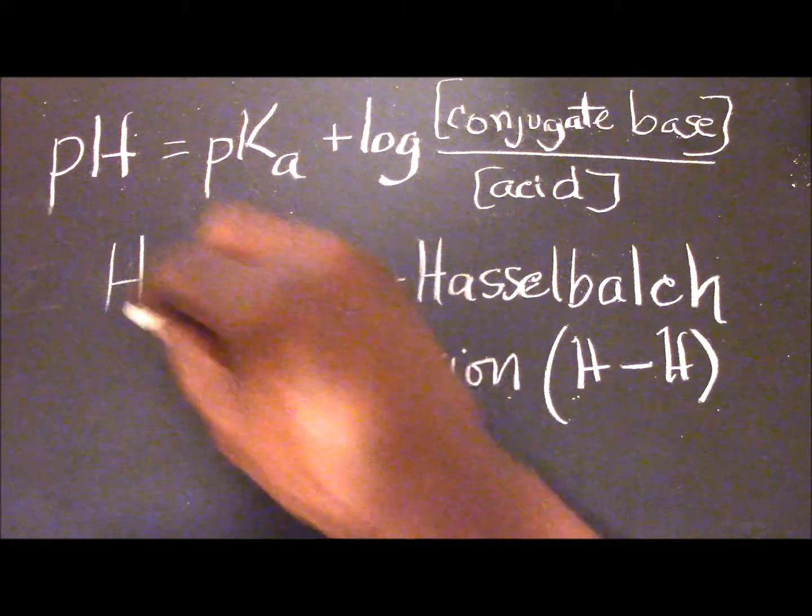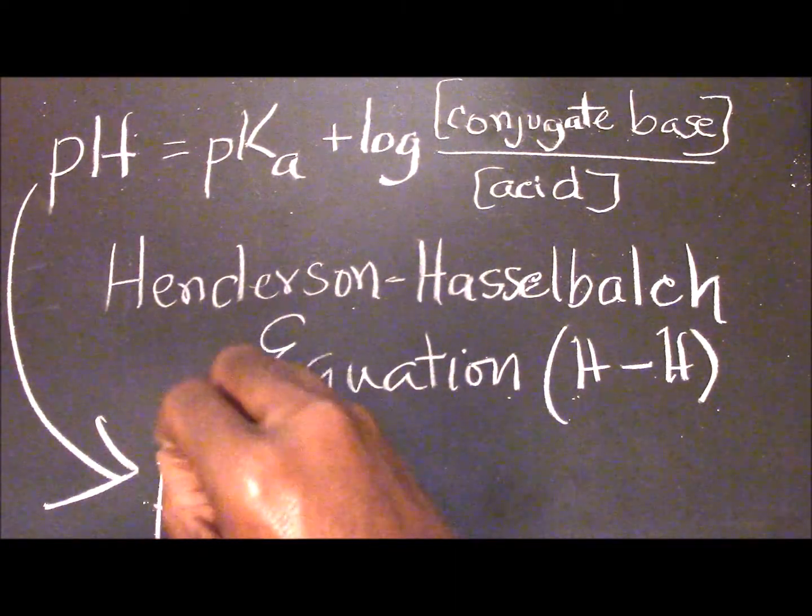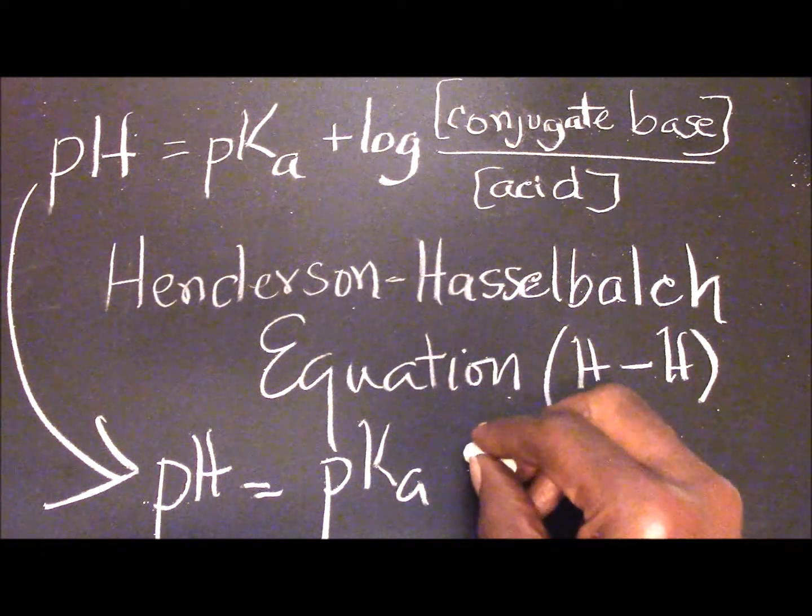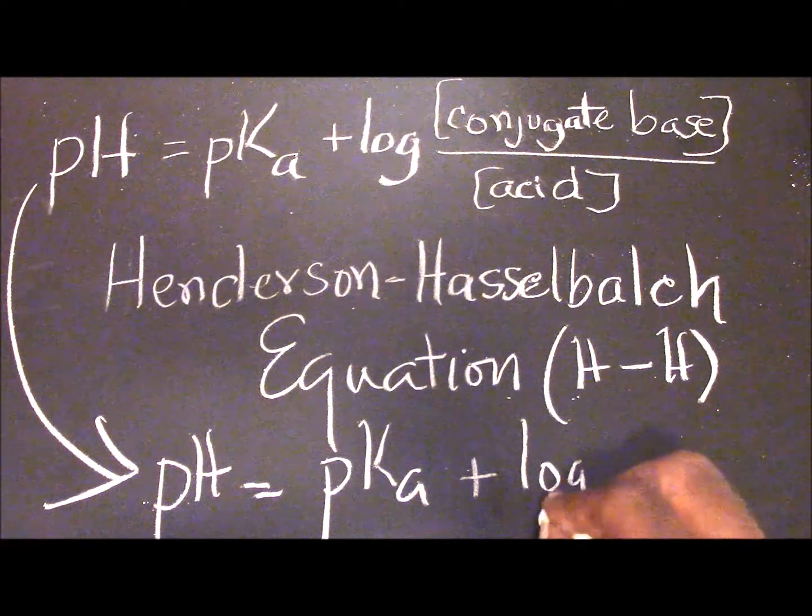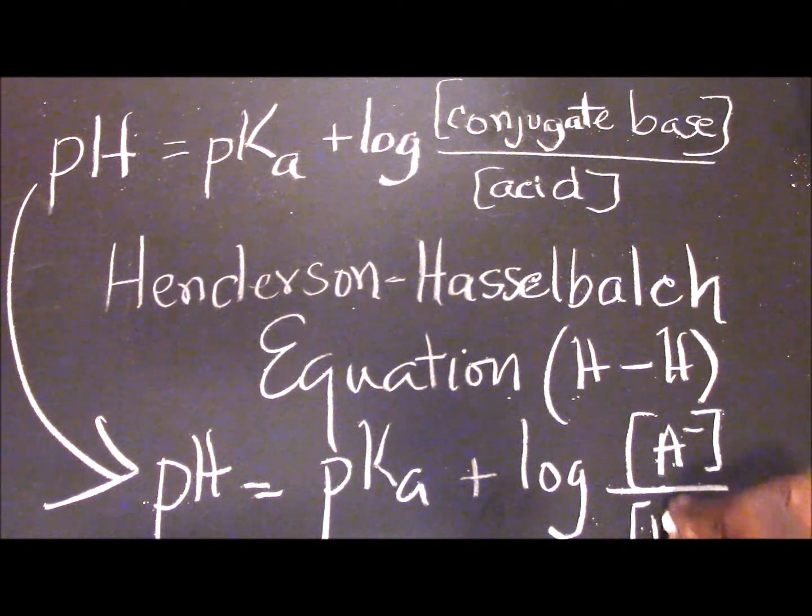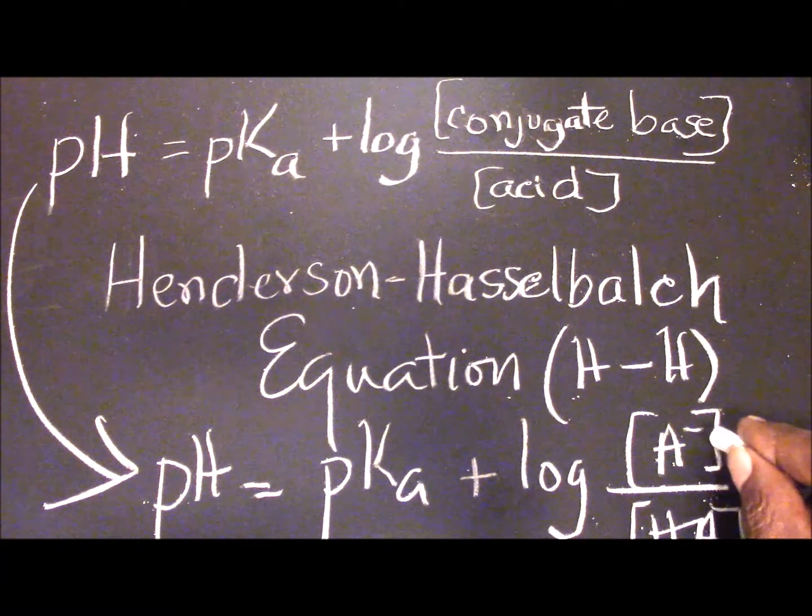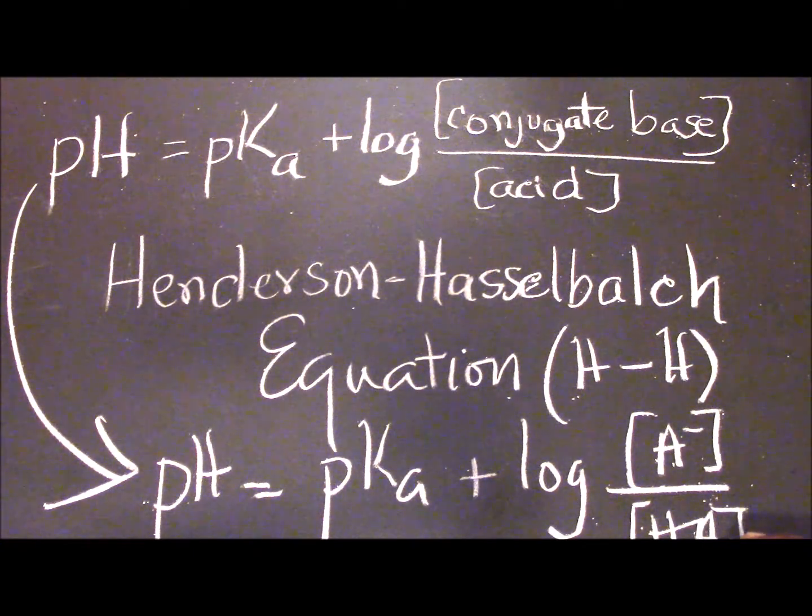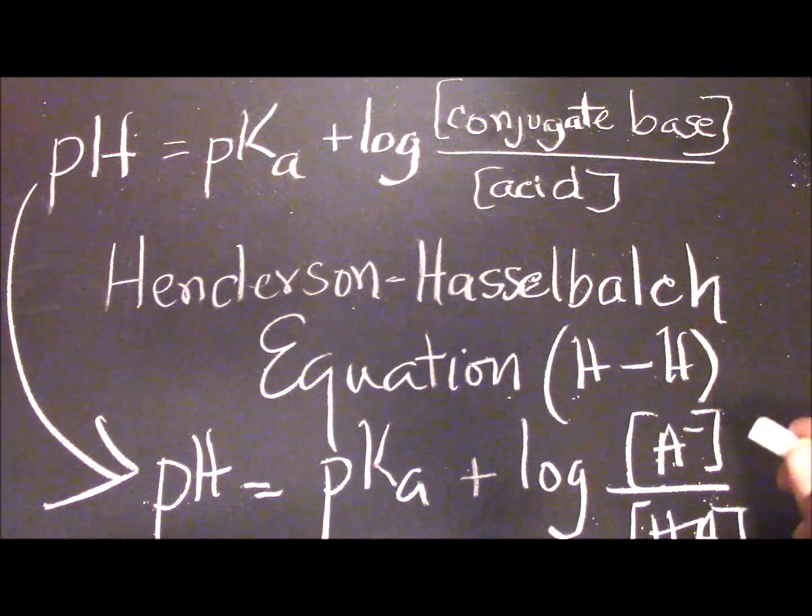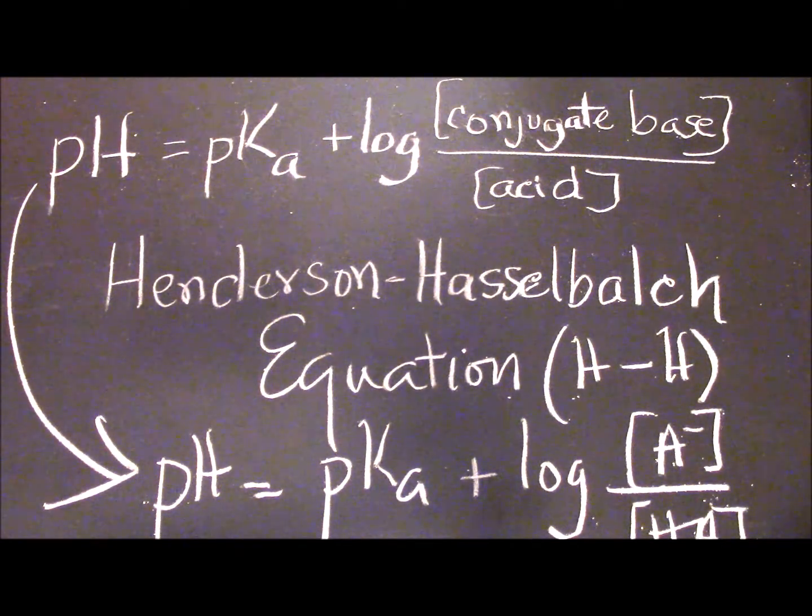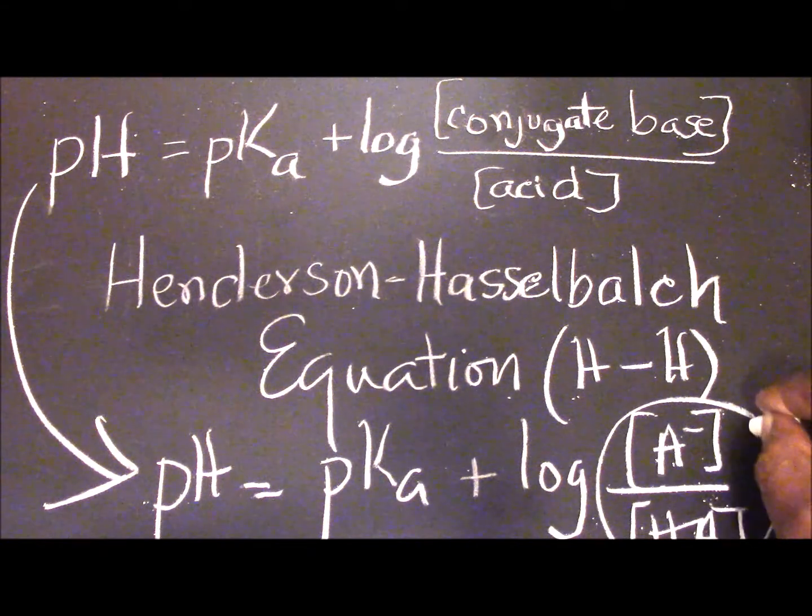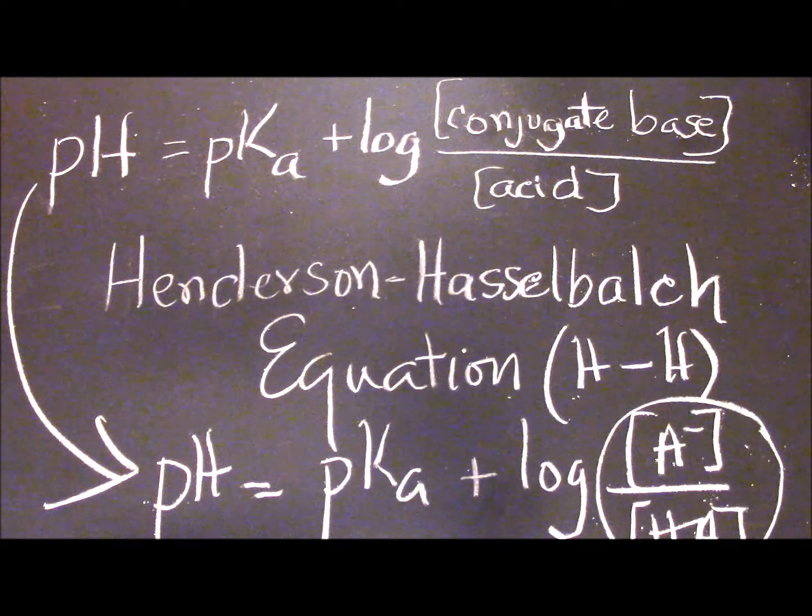Another way to write this formula is to say that the pH is equal to the pKa plus the log of A minus over HA, where A minus represents the conjugate base of the weak acid HA, or the alternate combination of a weak base and its conjugate acid. This essentially is what constitutes the buffer, and this is the Henderson-Hasselbalch equation as we know it.